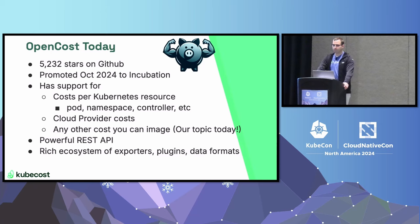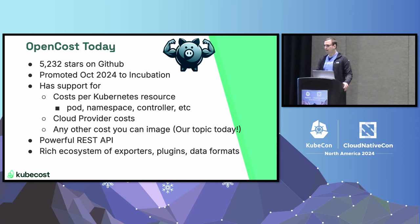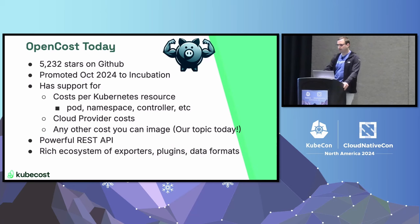OpenCost today has three main facets. Our bread and butter is Kubernetes costs — stuff like namespace costs, pod costs, et cetera. More recently, cloud provider costs: you integrate with your cloud provider and we provide those costs to you as well. Our topic for today, which is most exciting to me, is any costs you can imagine through OpenCost plugins. You can access all these costs through a powerful REST API, and most of our users leverage the API first. We're developing a rich ecosystem of exporters, plugins, and new data formats.